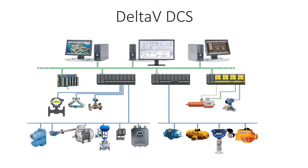On a production plant you might have different areas — for example, in oil and gas you might have a mine unit and a silver recovery unit, each with many processes running inside. Delta V DCS makes this easy: each area has its own control cabinet.